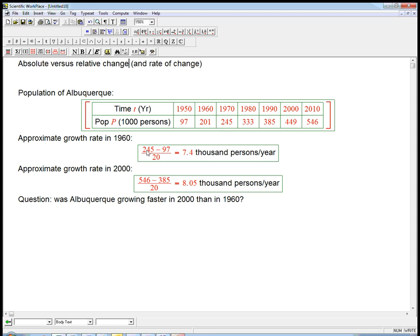We take 245,000 minus 97,000 people divided by the 20 years in the interval, we get 7.4 thousand people per year. And so that is an approximate—in other words, it's an approximation to the derivative p prime at 1960.